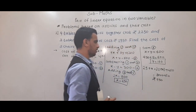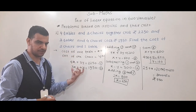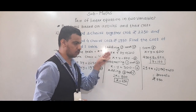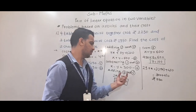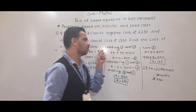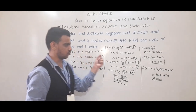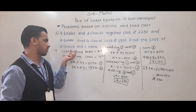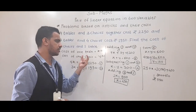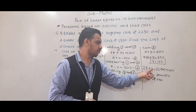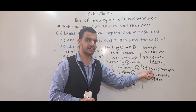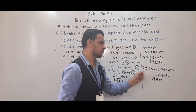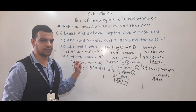To summarize: first, form the equations — we get 4x plus 3y equals 2250 and 3x plus 4y equals 1950. Then solve to find x and y. Finally, find the cost of 2 chairs and 1 table: 2 into y plus x, that is 2 into 150 plus 450, which gives a total cost of 750 rupees.